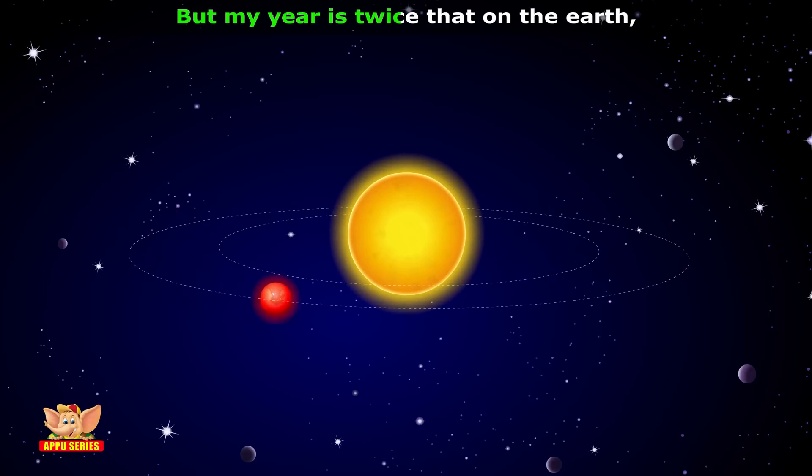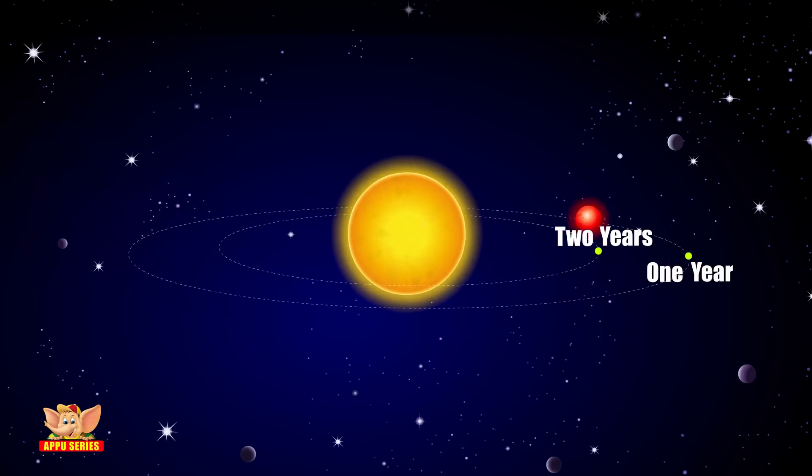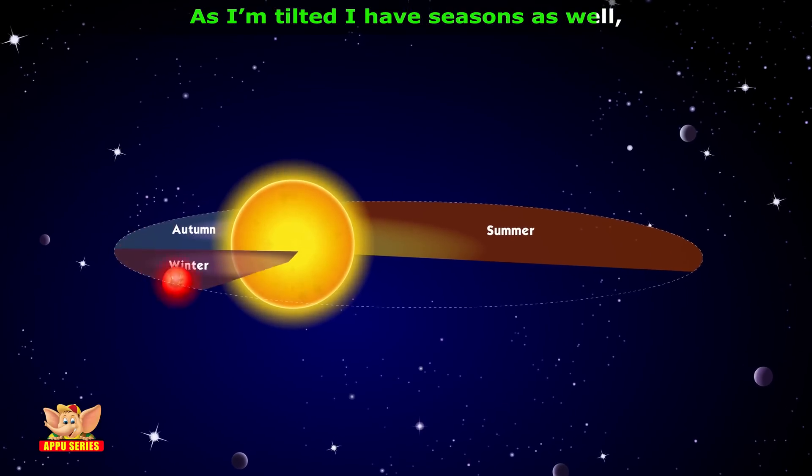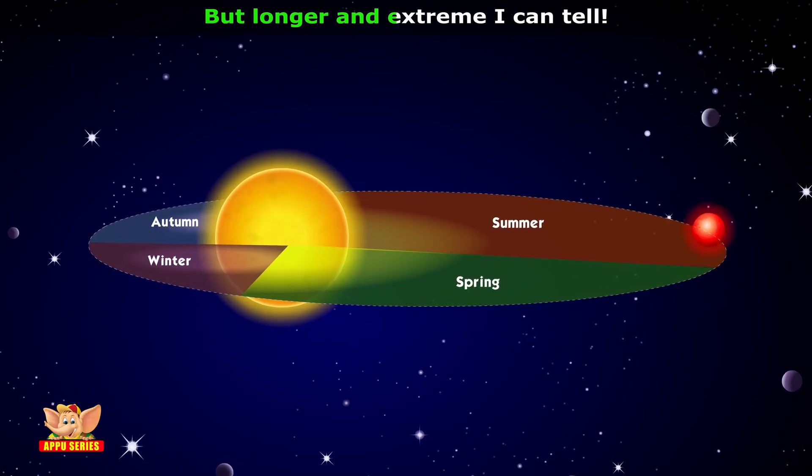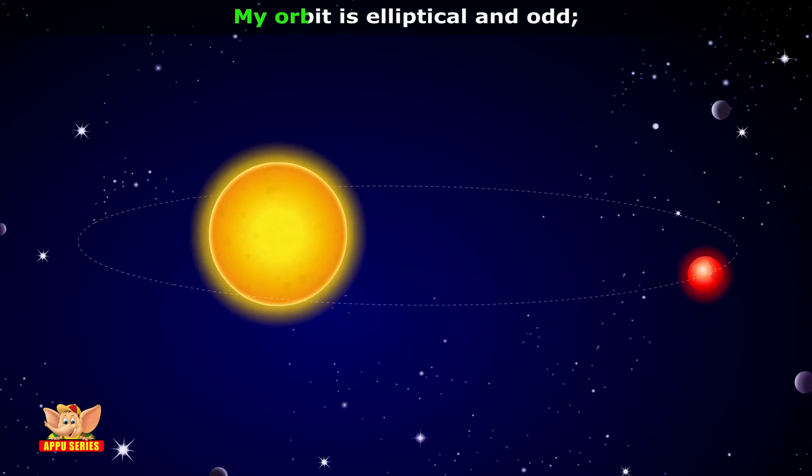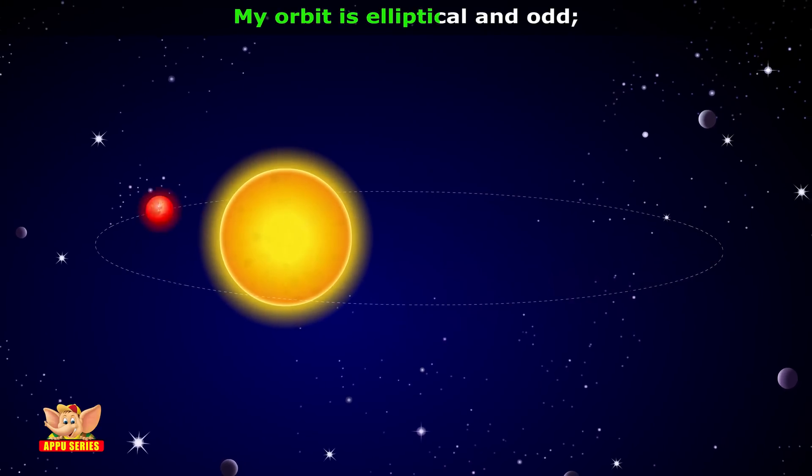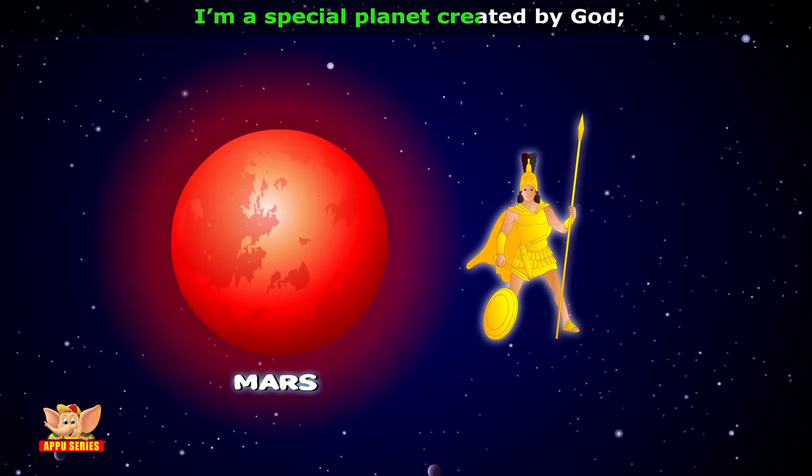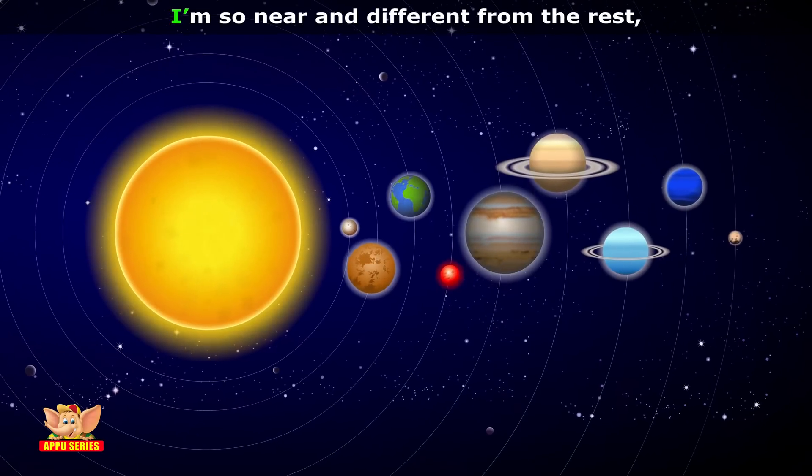my year is twice that on Earth. As I am tilted, I have seasons as well, but longer and extreme I can tell. My orbit is elliptical in being, but I am a special planet created by God. I am